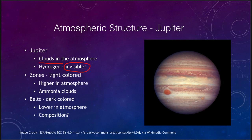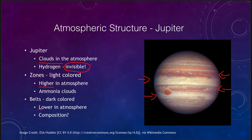Jupiter is divided into alternating light and dark bands. We call the lighter colored areas zones and the darker colored areas belts. Because we're looking at an atmosphere rather than the surface of a ball, the lighter colored zones are actually areas that are higher up in the atmosphere, while the belts are lower down. The zones are known to be made of ammonia clouds, although the composition of the belts is still in question.